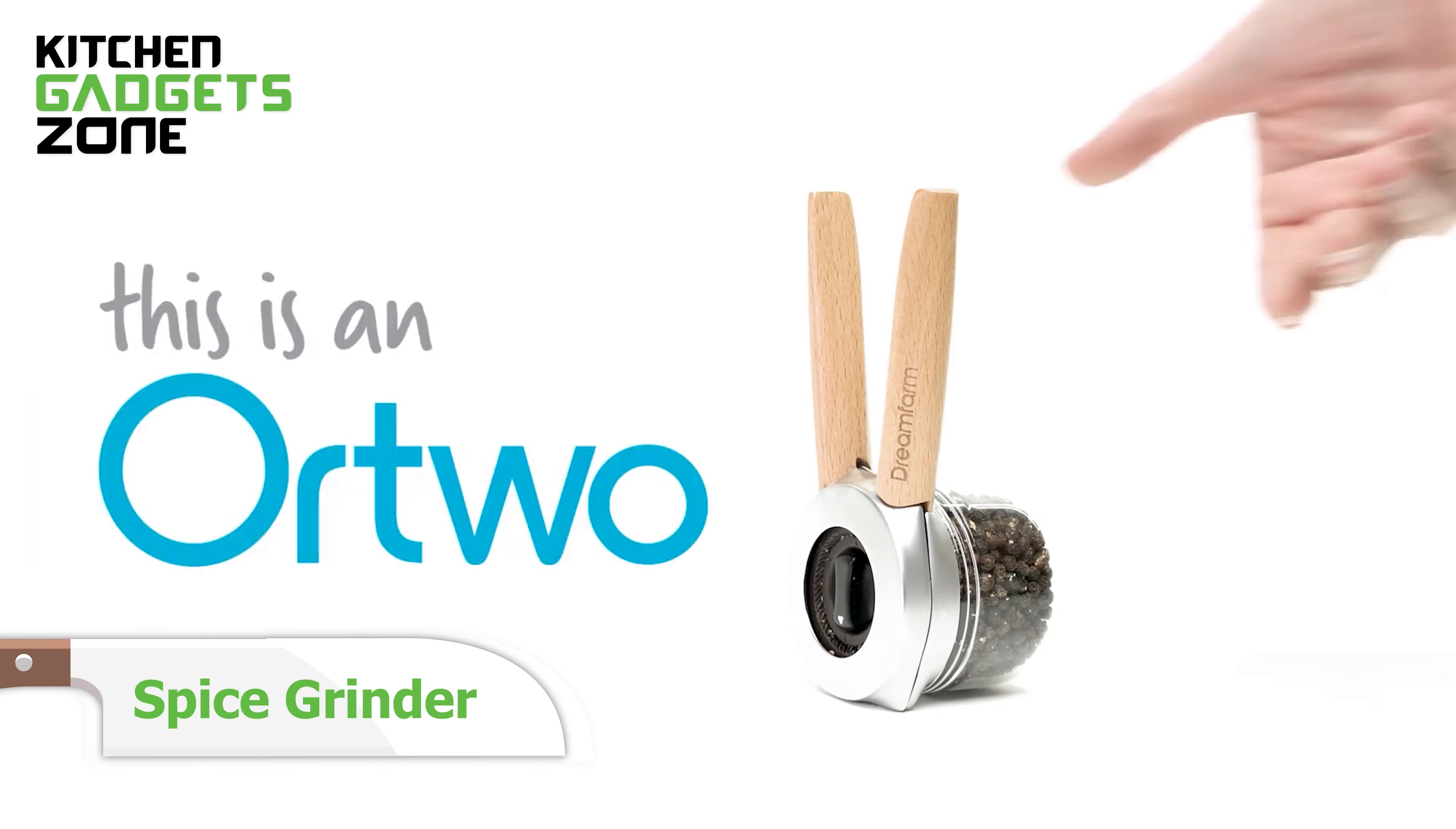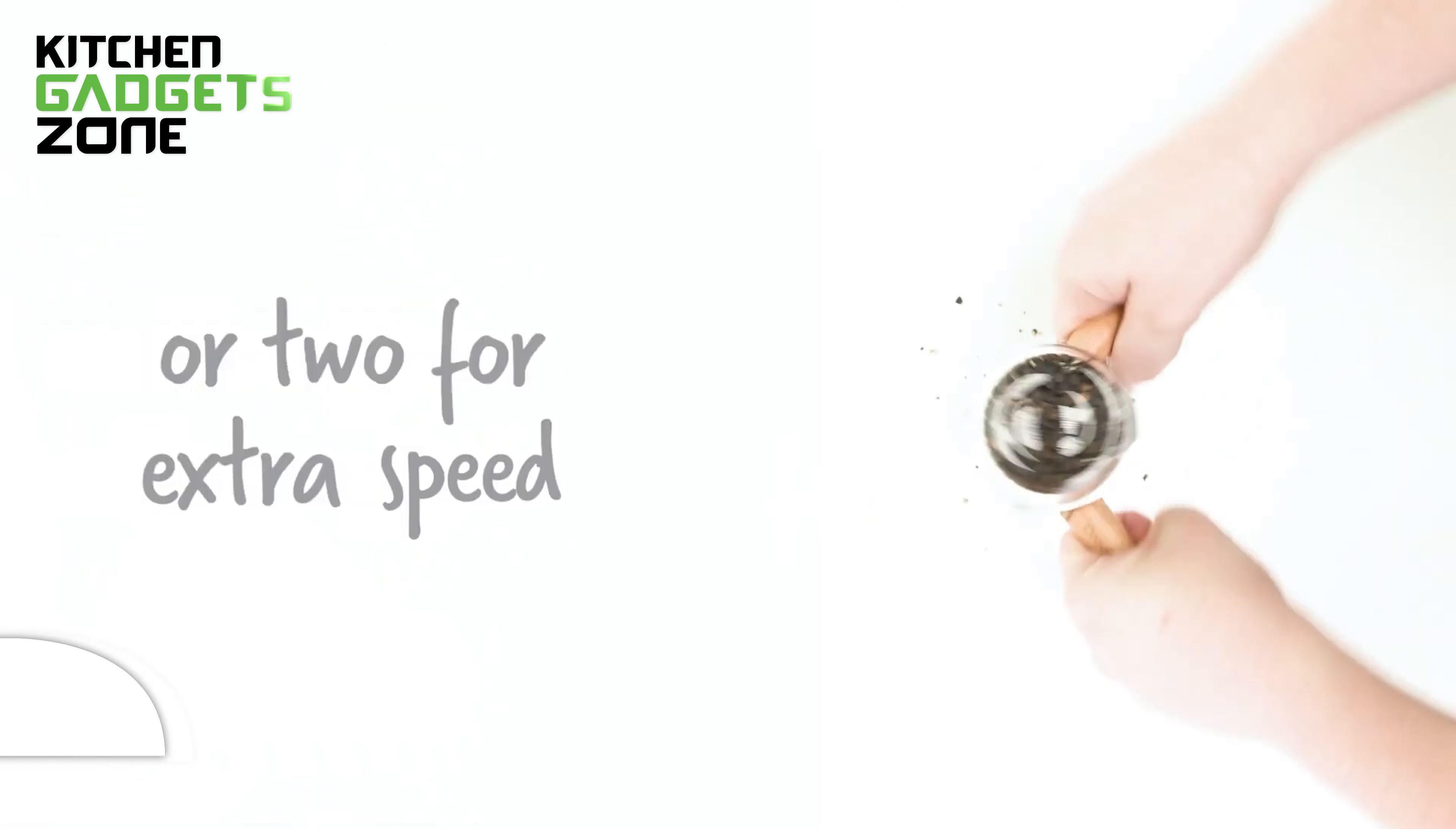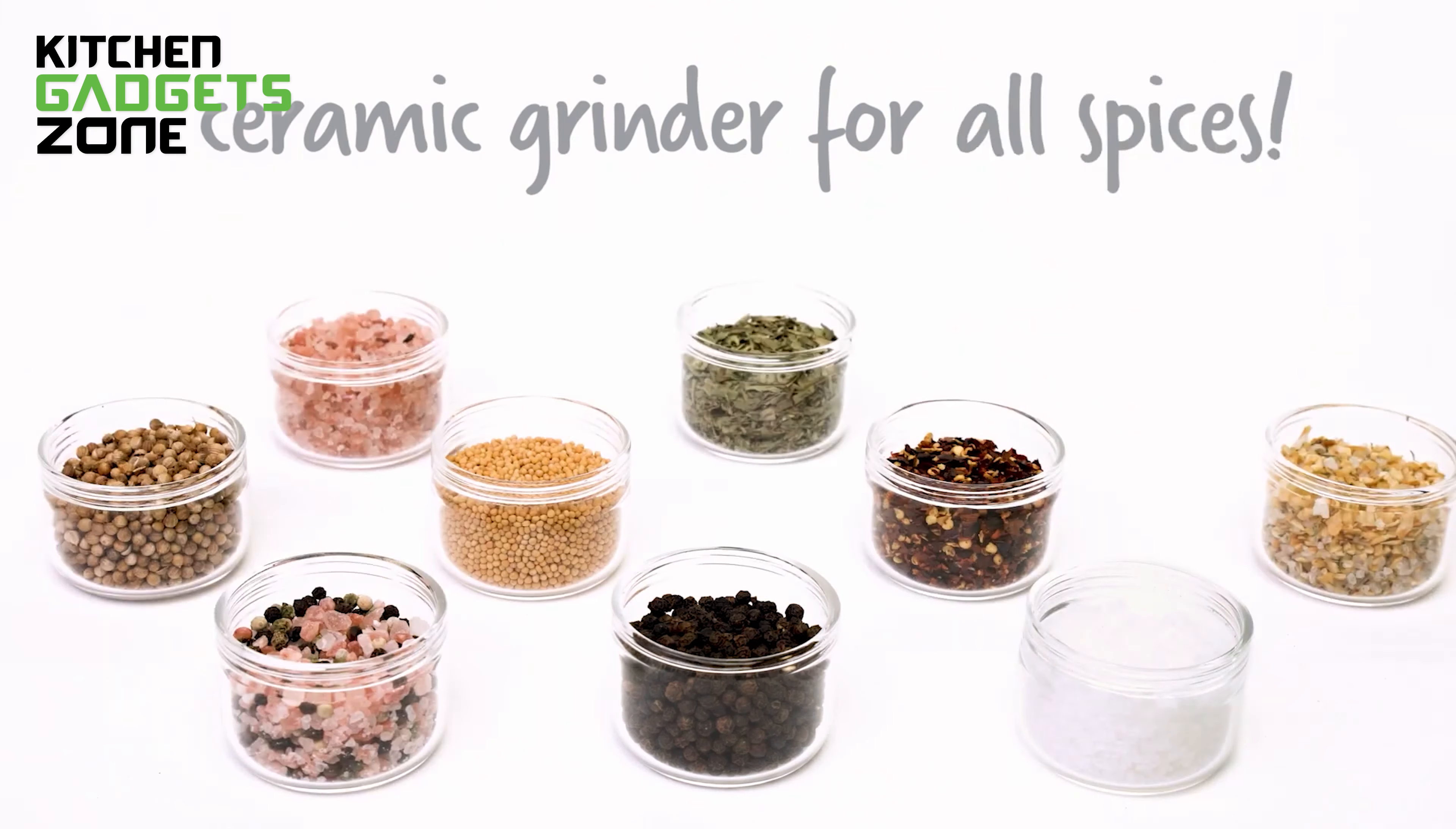Say goodbye to bland dishes and hello to flavor-packed meals with the Ortwu Spice Grinder. This ingenious gadget features handles that squeeze together for convenient one-handed operation or open apart for increased output when using two hands. The ultra-sharp custom ceramic mechanism has six grind settings, from superfine to coarse, and can be used for grinding all types of spices and seeds without ever rusting.